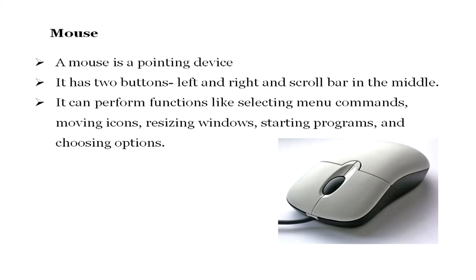The next input device is the mouse — a very common device you must have seen around your computer. It is a pointing device that generally has two buttons, left and right, with a scroll bar in the middle. It is used to perform functions like selecting menu commands, moving icons, resizing windows, starting programs, and choosing various options.